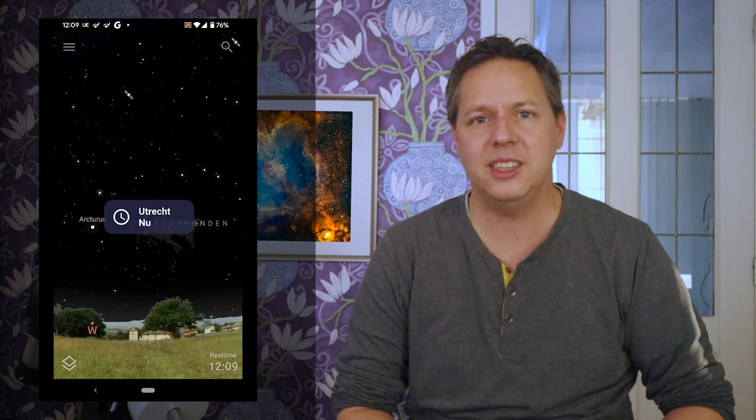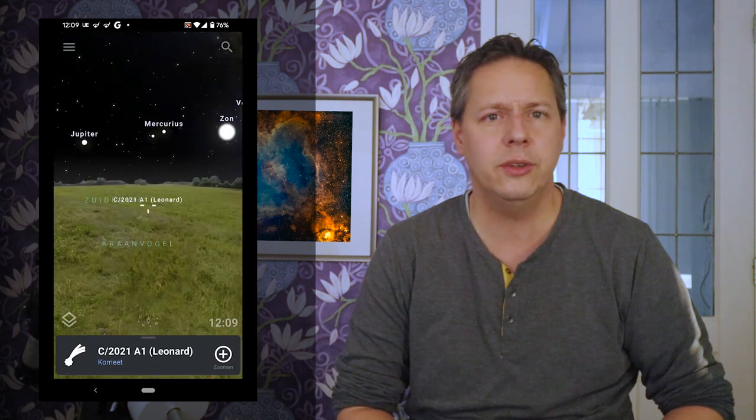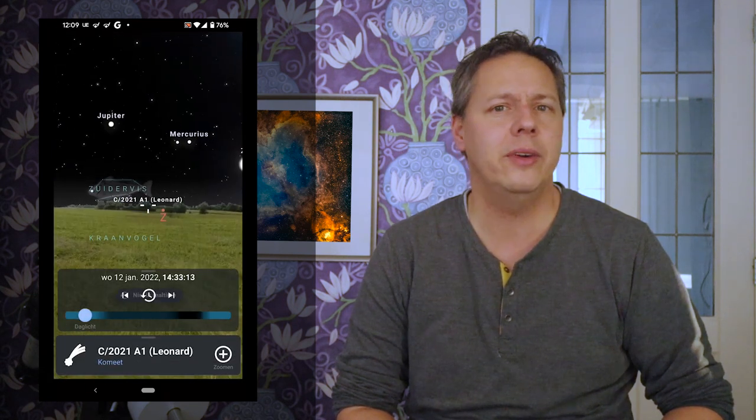If the comet is visible with the naked eye, you can use mobile apps such as Stellarium or SkySafari, which will show you a virtual reality map of the sky from your exact location, so you'll be able to find that comet.